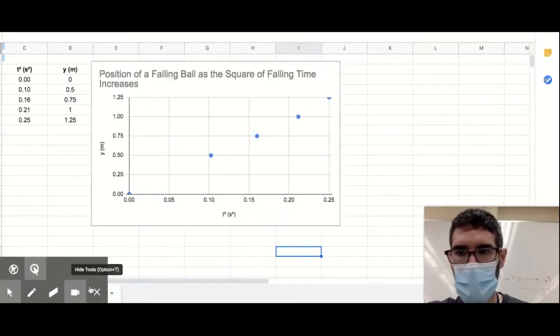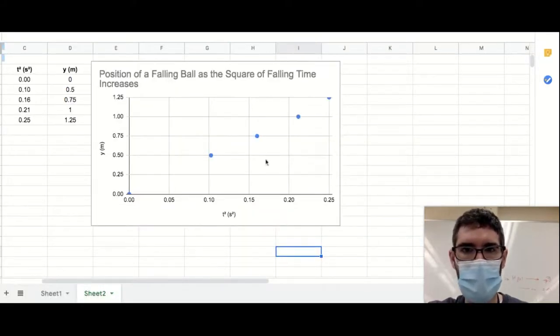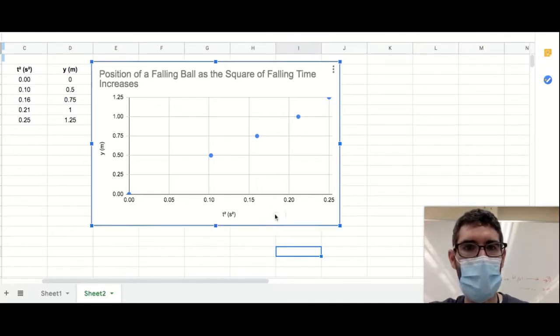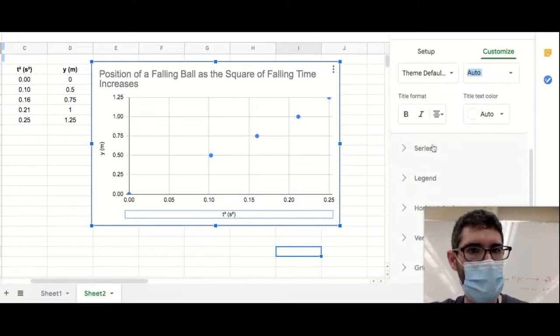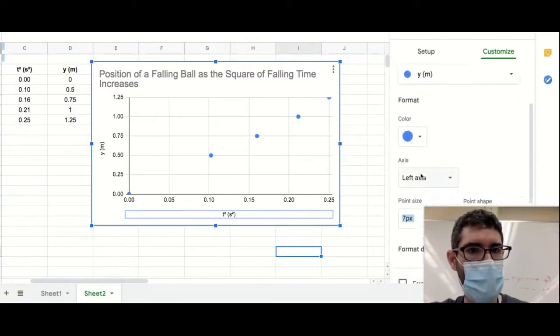And then what you get is something like this, where t squared is plotted on the horizontal axis, position is plotted on the vertical axis. And if we try to fit those data points, I bet we'll see a little something more like what we're looking for.